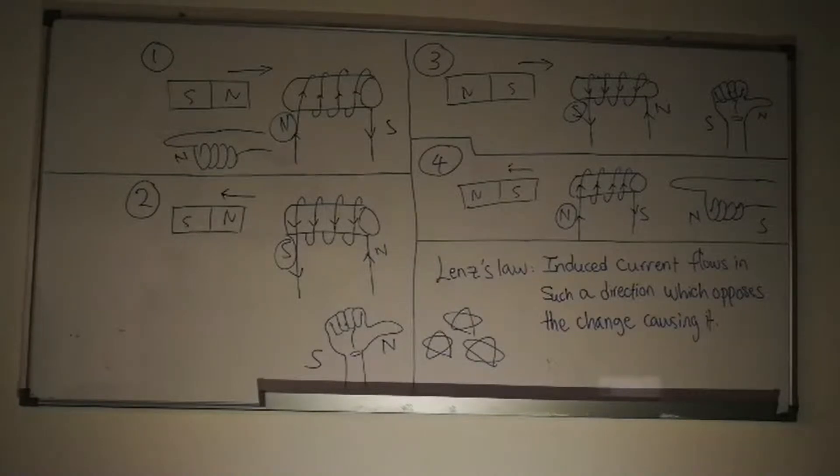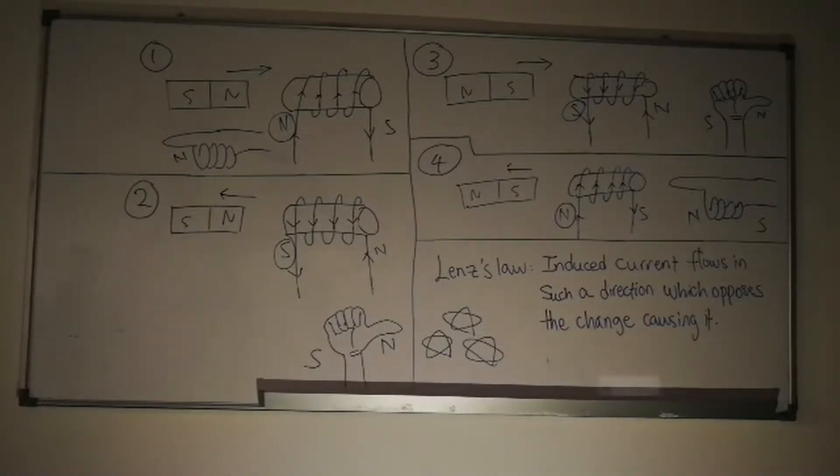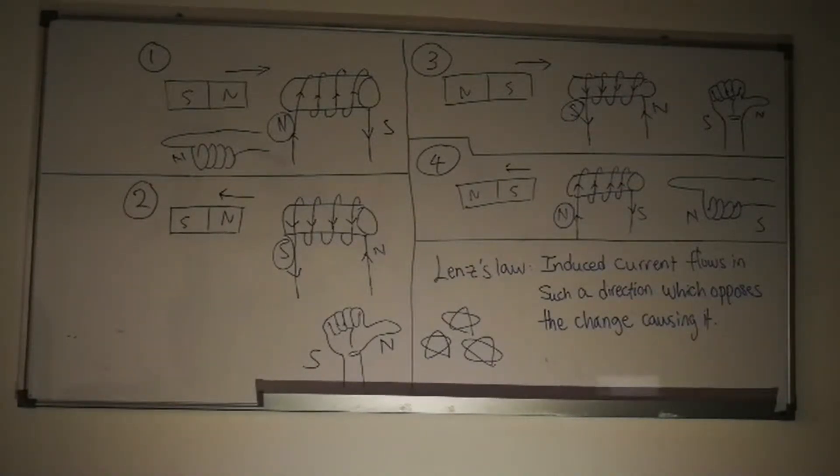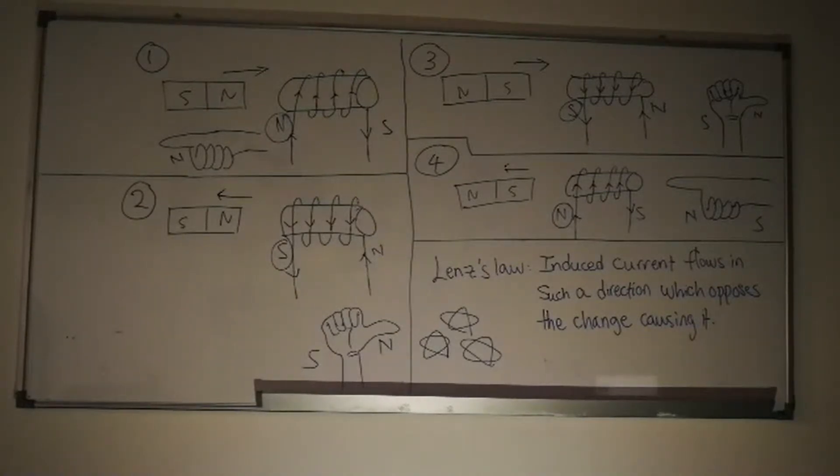In the fourth diagram, the magnet is moved away from the solenoid. This time, the south pole of the magnet is closest to the end of the solenoid. The magnetic flux in the solenoid decreases.